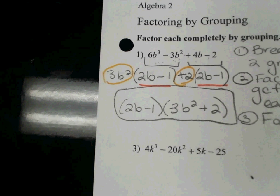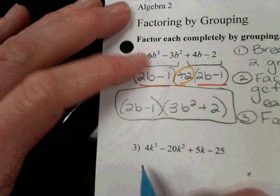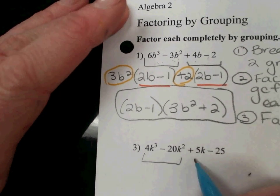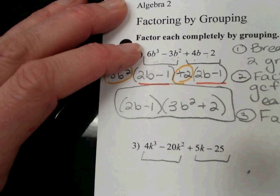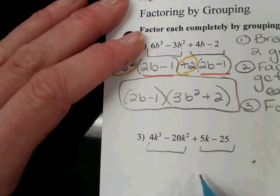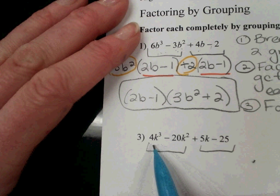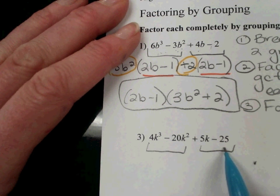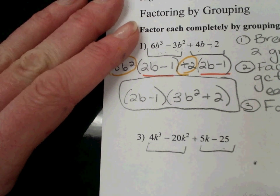Number three. Looking at these two groups, that's our first step. Looking at the GCF of each one. So 4k³ minus 20k², what's the GCF?